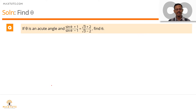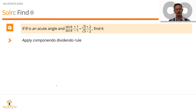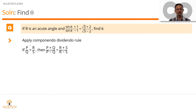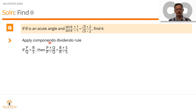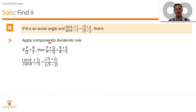The first approach involves a concept from ratio proportion called the Componendo Dividendo rule. If you have two fractions p/q and r/s such that p/q = r/s, then by the Componendo Dividendo rule, we can say that (p + q)/(p − q) = (r + s)/(r − s). Let's apply that to our case.